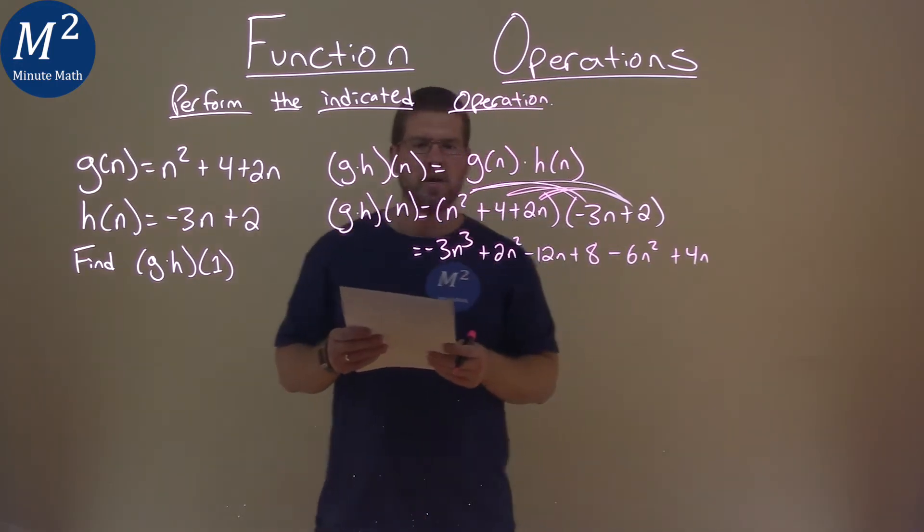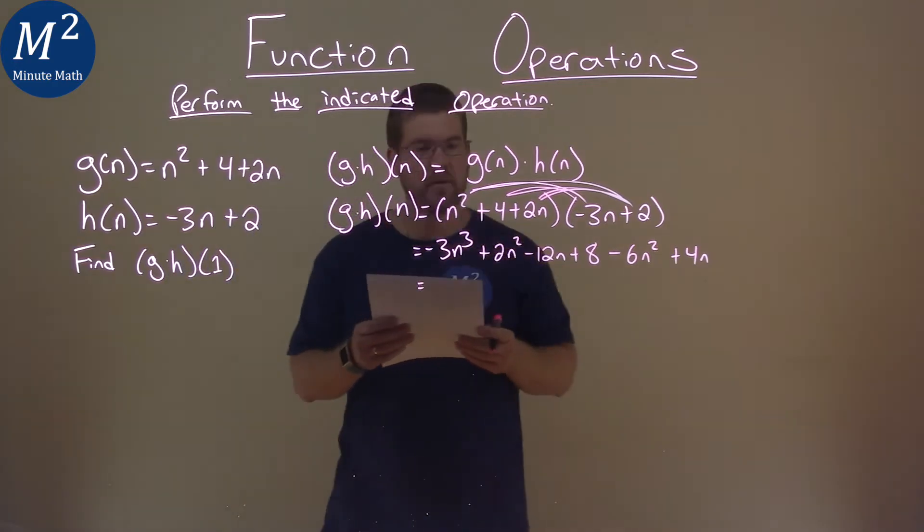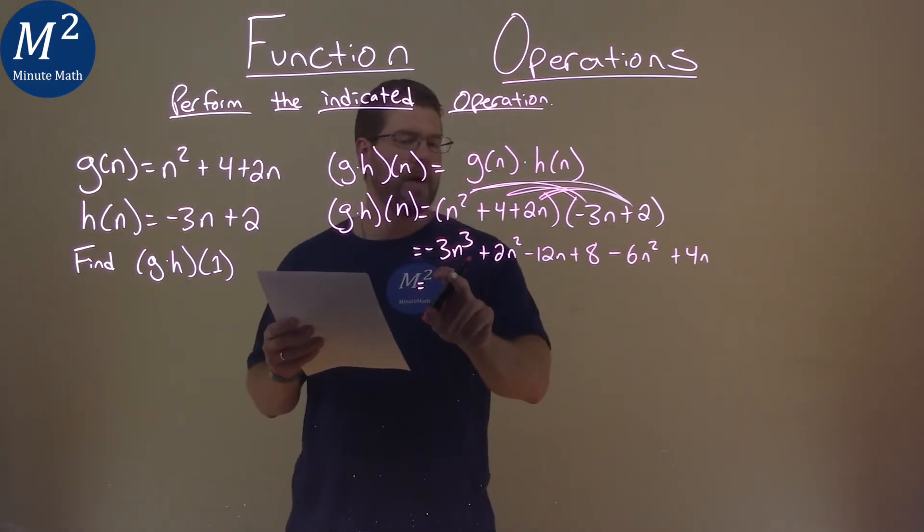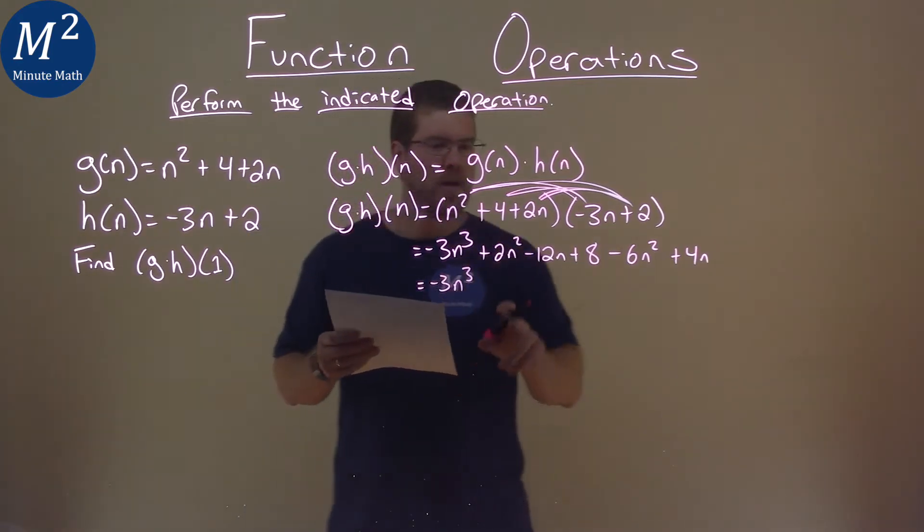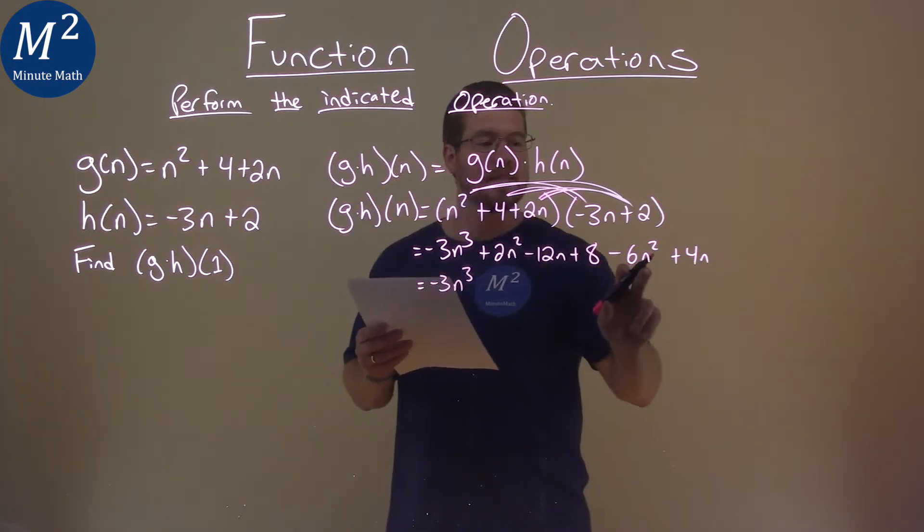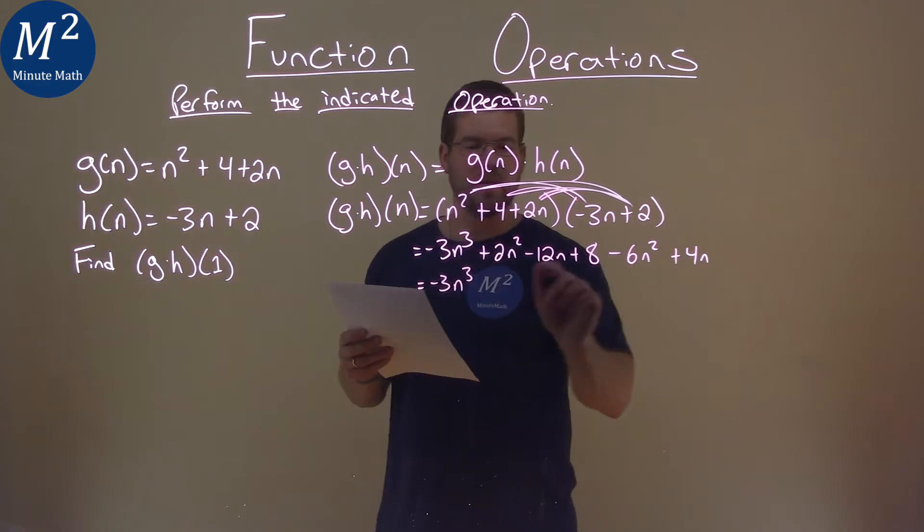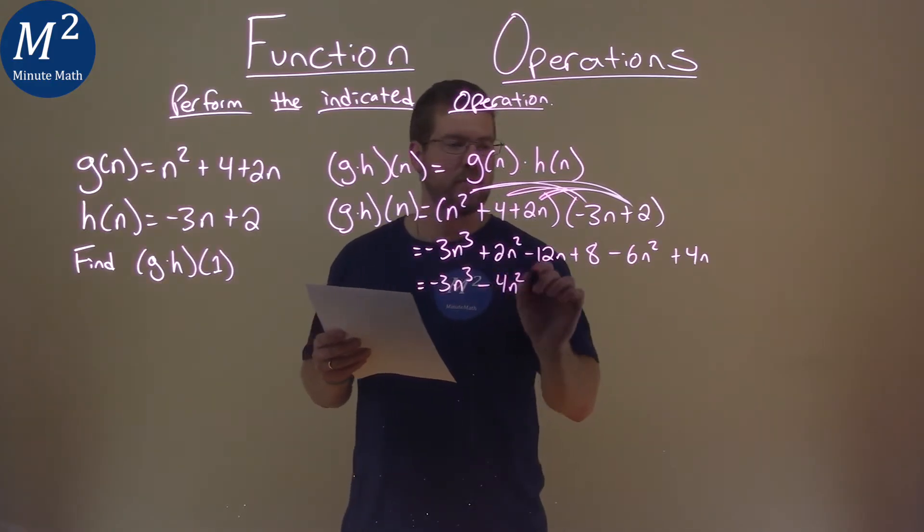All right. So let's simplify this and combine our like terms. Nothing is to the third power aside from the first term so we have negative 3n to the third here. Well 2n squared and minus 6n squared can be combined and that's minus 4n squared.